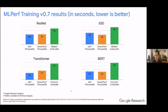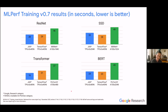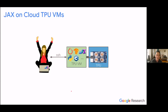These numbers were produced on internal Google TPUs, not on cloud TPUs — same chips but with different software on top. Until recently, there wasn't a way to access cloud TPUs in a way that you could reasonably run a high-performance workload like this. But now you can, with cloud TPU VMs.